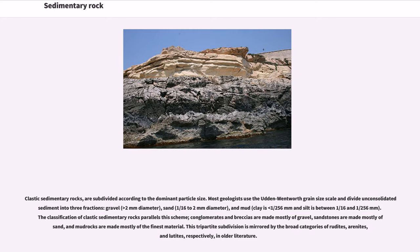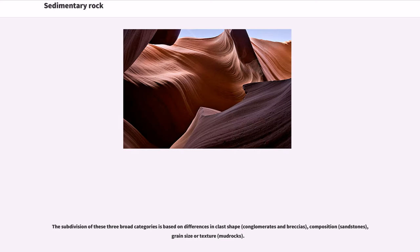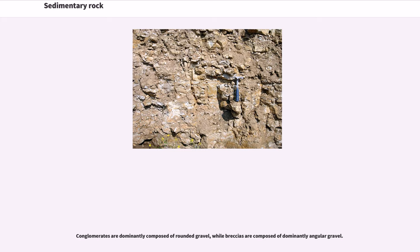This tripartite subdivision is mirrored by the broad categories of Rudites, Arenites, and Lutites, respectively, in older literature. The subdivision of these three broad categories is based on differences in clast shape, composition, grain size or texture. Conglomerates are dominantly composed of rounded gravel, while breccias are composed of dominantly angular gravel.